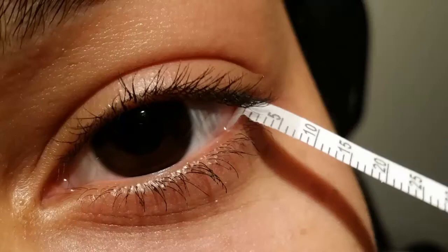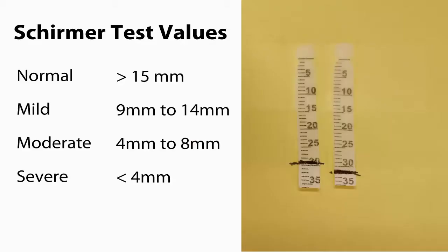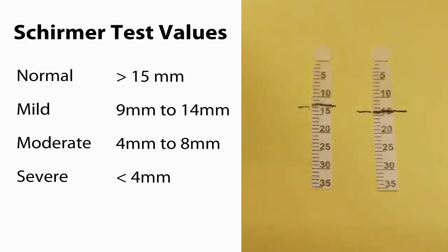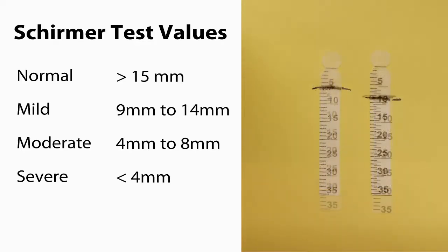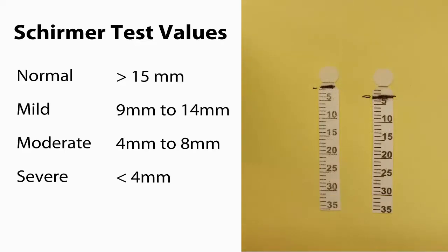So how do you interpret the results of the Schirmer test? Normal is considered greater than or equal to 15 millimeters of wetting after five minutes. Mild is 14 to 9 millimeters. Moderate is 8 to 4 millimeters. Severe is considered less than 4 millimeters of wetting.